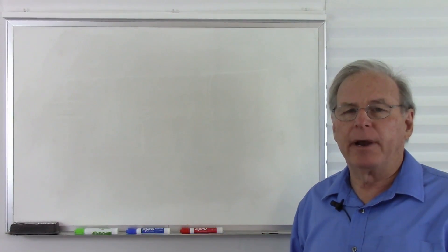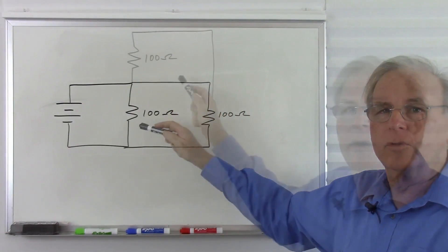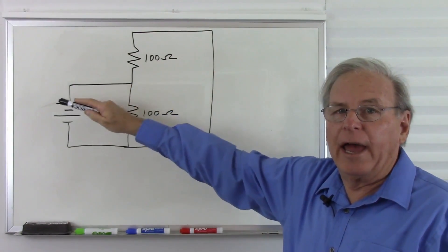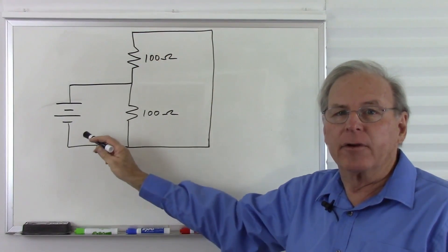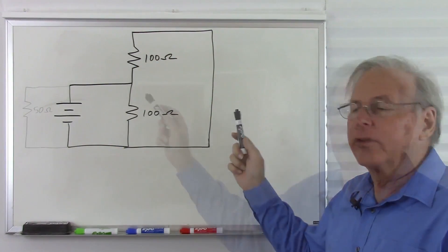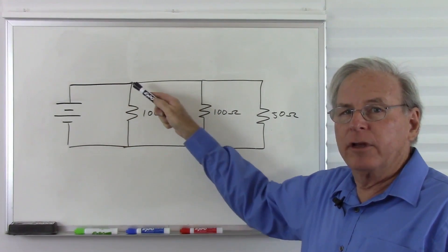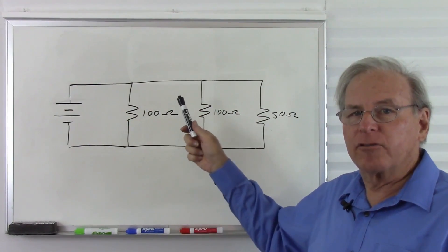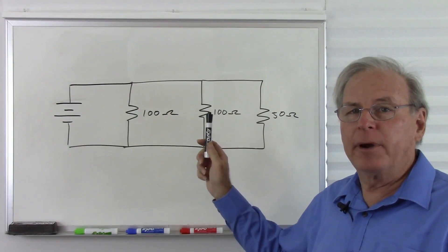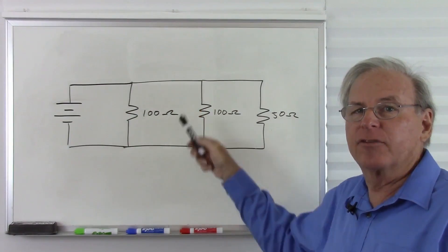A parallel circuit is not parallel because of the way I draw it, but because there are multiple current paths. So here is a parallel circuit, but this parallel circuit is identical to this circuit — in both cases the current goes in two different directions through two resistors and then comes back together for a single total current. So parallel circuits are often drawn this way, but what makes it a parallel circuit is the fact that we have multiple paths that the current can flow.